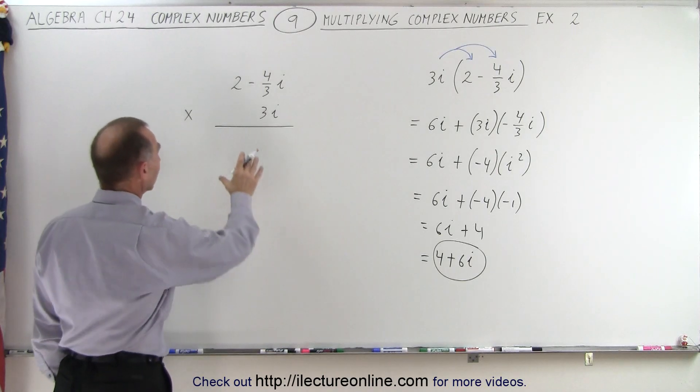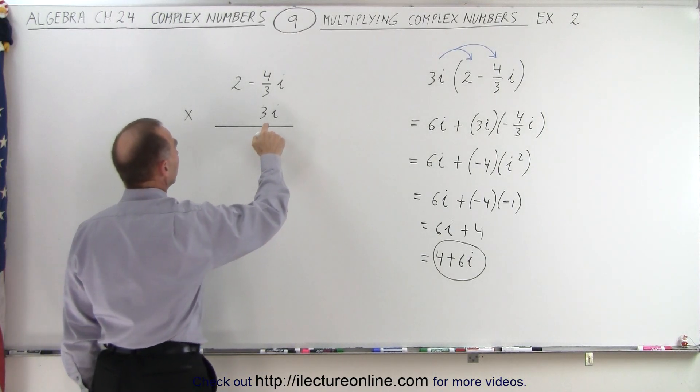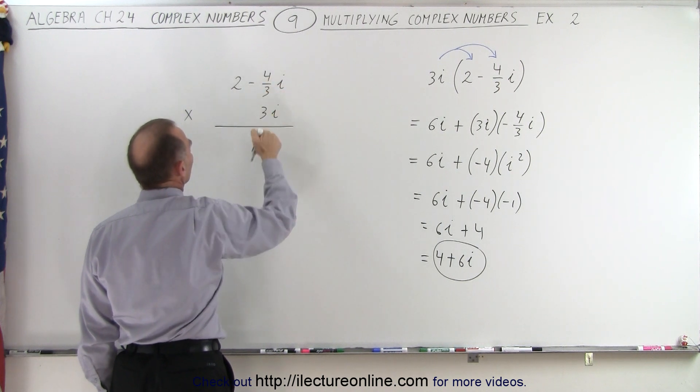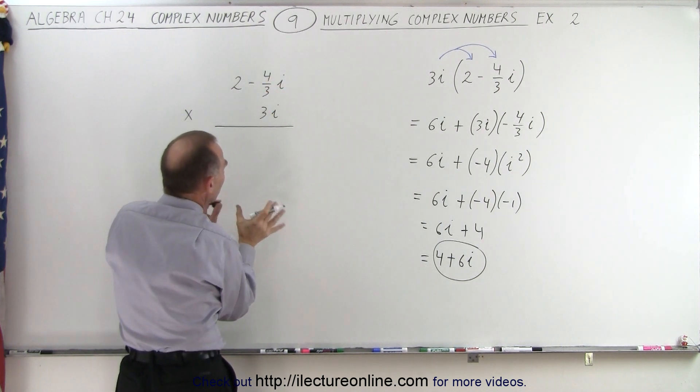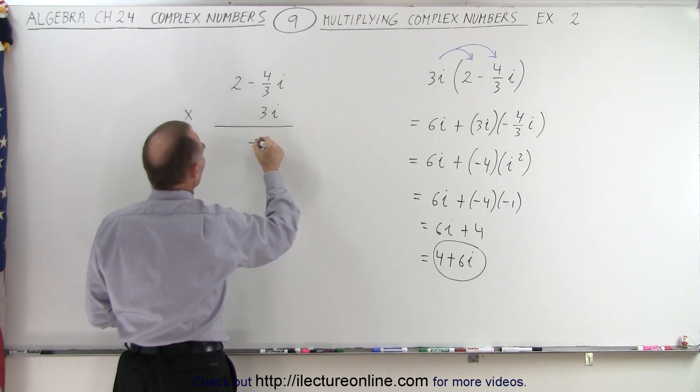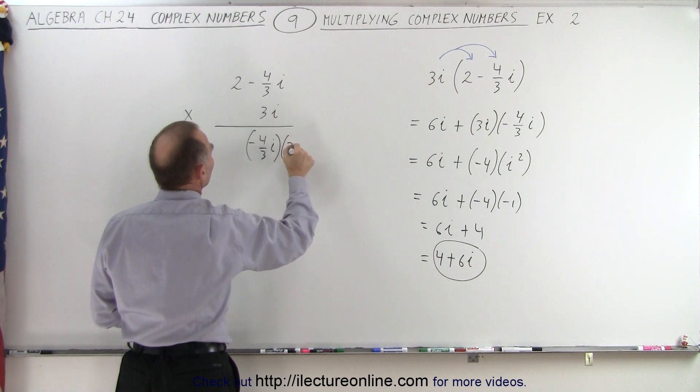Now let's check by doing it in a vertical direction. So here we have 3 times negative 4/3. Notice, if you're not sure what to do, if you can't do it right away in your head, we can simply write it like this: minus 4/3 i, multiply times 3i.